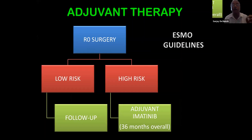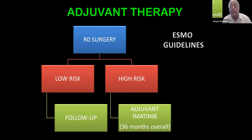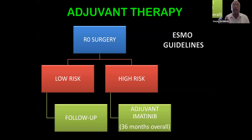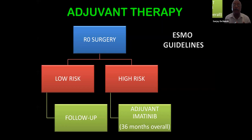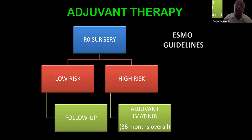A cautionary note: one patient was placed on adjuvant imatinib for four years by Dr. Advani at Tata Memorial Hospital. Imatinib affects the vascular endothelium, and she developed a deep vein thrombosis. Once stopped, she returned with recurrence three to four months later. So the accepted norm of 36 months is a guideline, not absolute, and statements must be tempered with clinical judgment. You have to be careful about vascular complications when using imatinib.